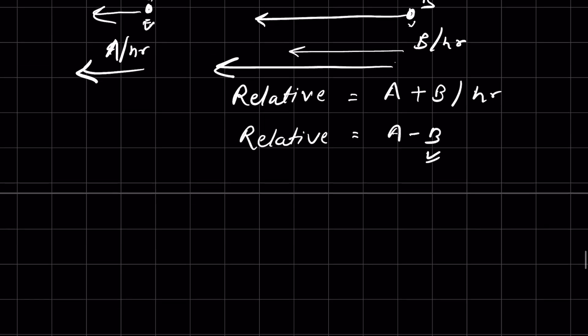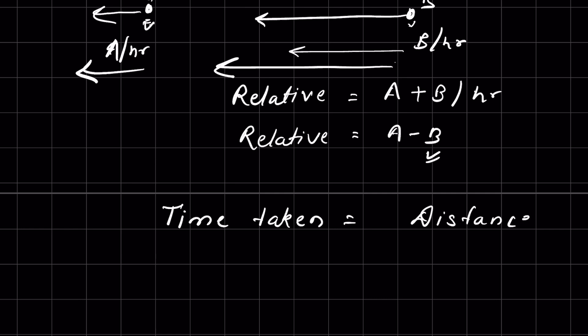This relative speed will determine the time taken. Time taken to reach a certain point is distance divided by speed — and here, the speed used is not the normal speed but the relative speed, depending on whether they are traveling towards each other or away from each other.